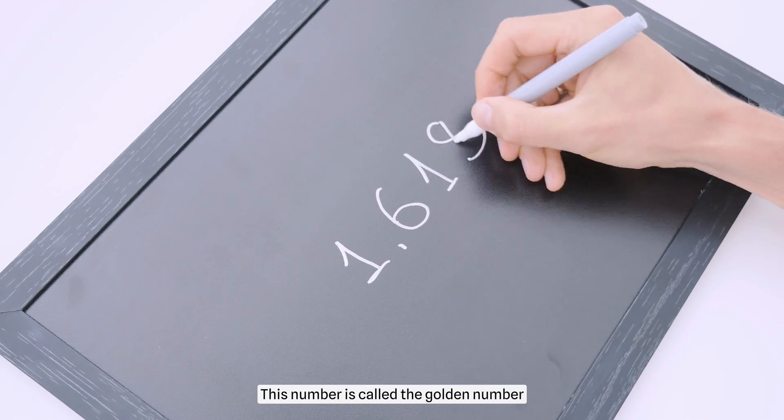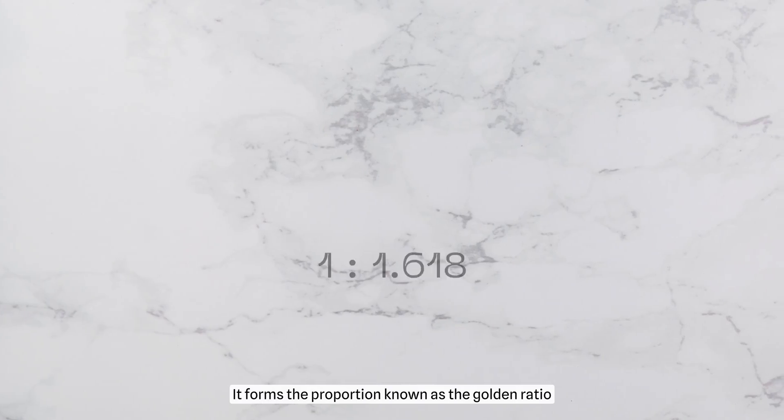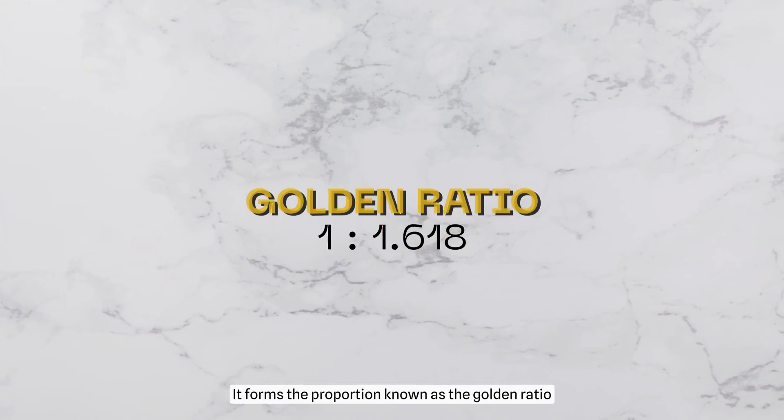This number is called the golden number. It forms a proportion known as the golden ratio.